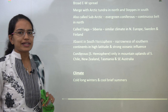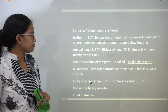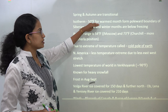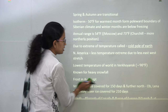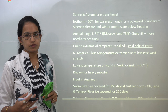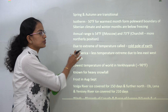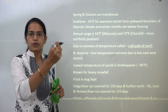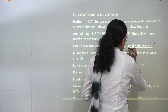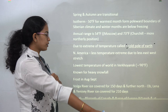Coming on to the climate: winters are long and cold, while summers are very small and brief. Spring and autumn are transition seasons. The isotherm is 50 degrees Fahrenheit for the warmest month moving poleward, and in winter months temperatures go below the freezing point of 0 degrees Celsius — so you have negative temperatures. Due to the extreme temperatures seen in this coniferous belt, we call it the cold pole of the north — also known as the cold pole of the earth, which is a common MCQ question.